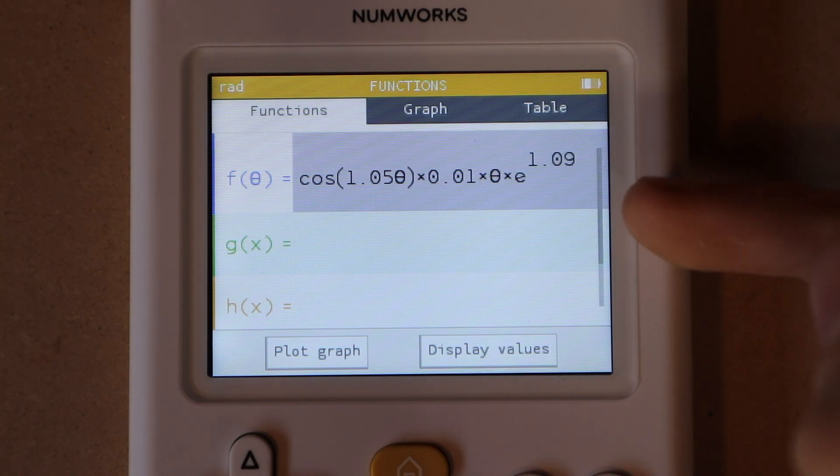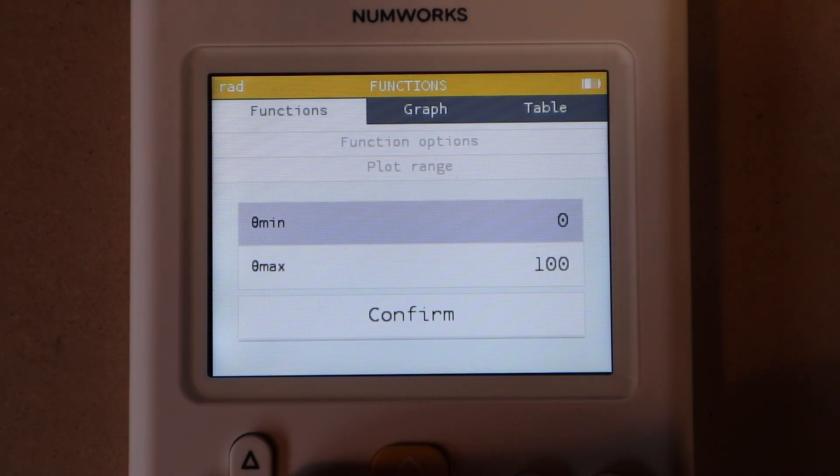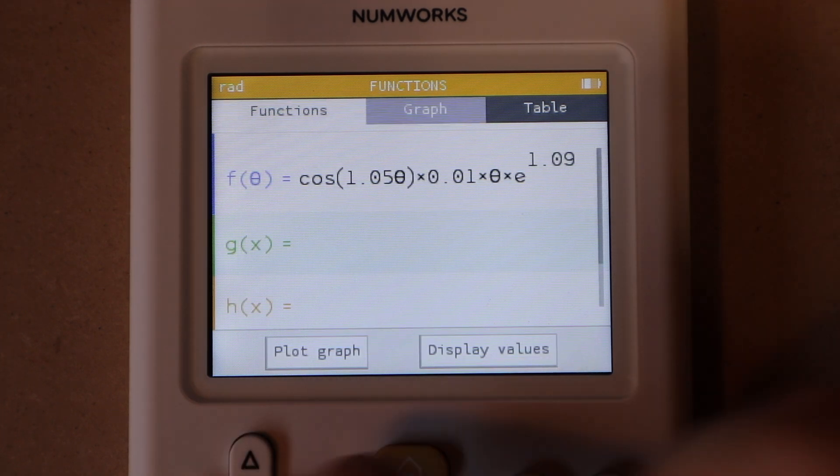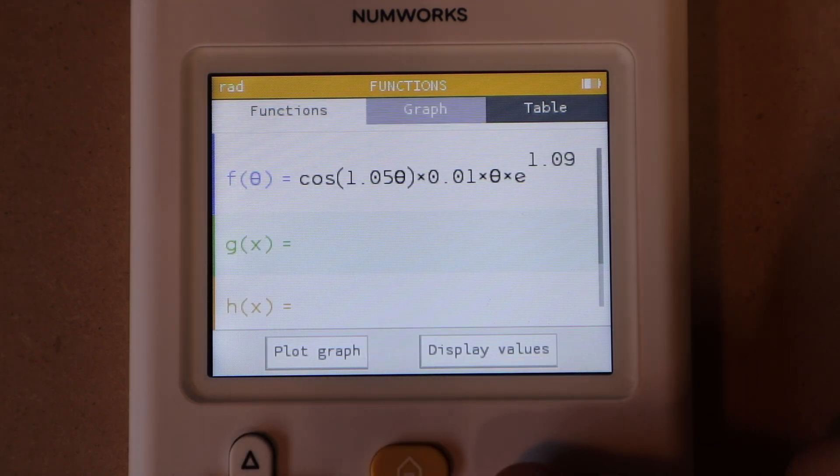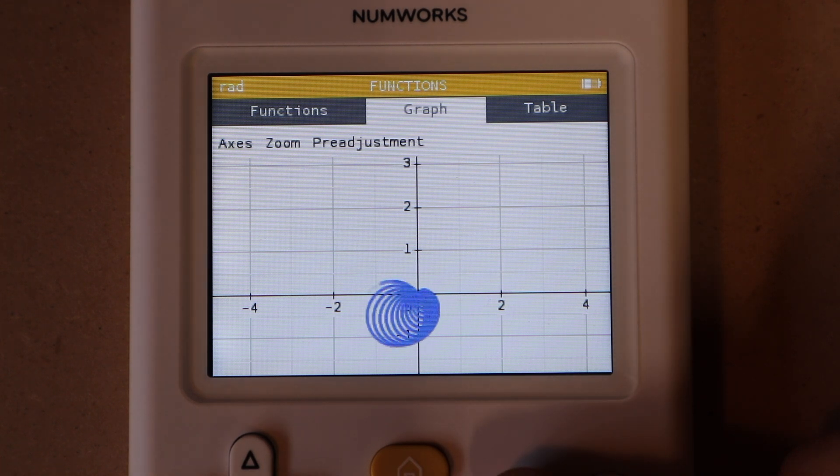For example, if I wanted to graph this function right here, I would just type it in and then also make sure you set your correct plot range. So right now I have theta going from 0 to 100. By default it will just go from 0 to 2 pi, and then once you're ready to graph just go up to the graph window as usual, press enter, and it will draw your function.